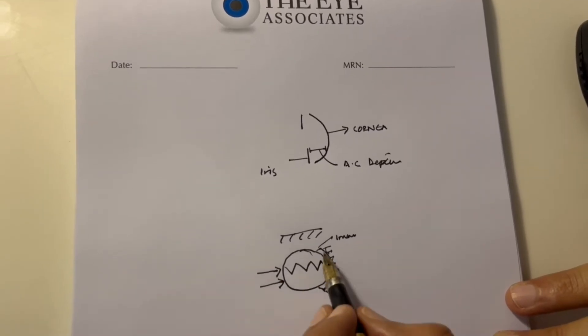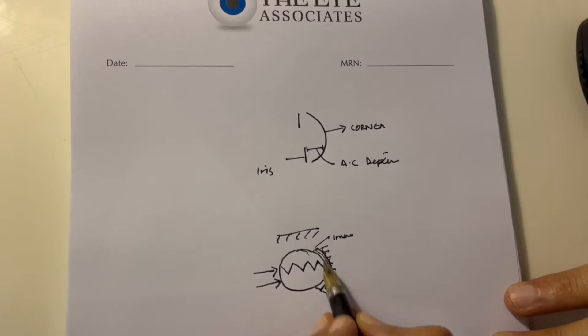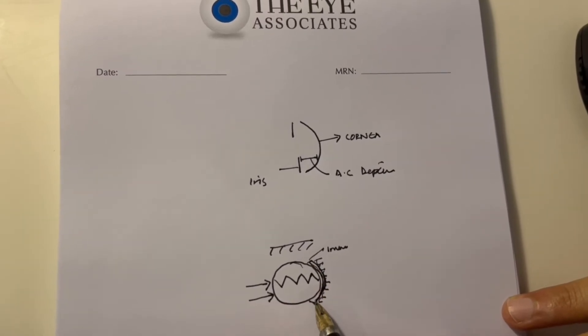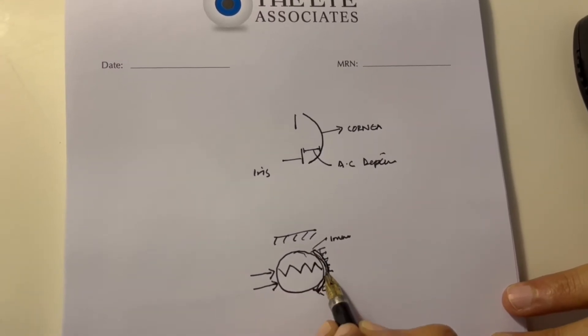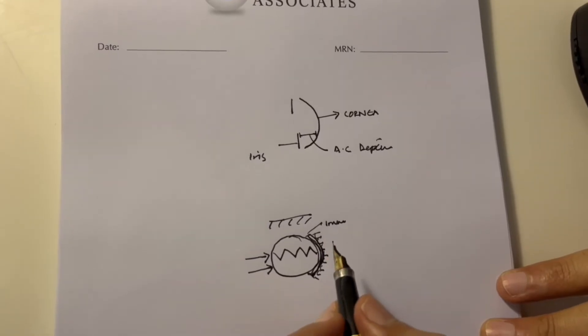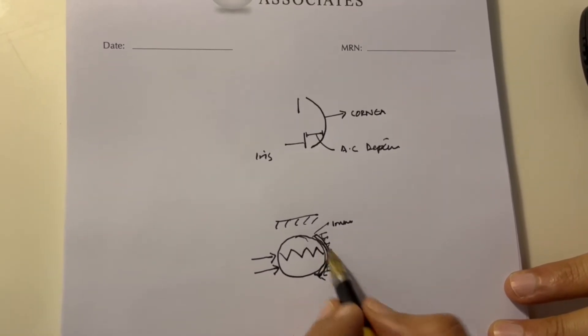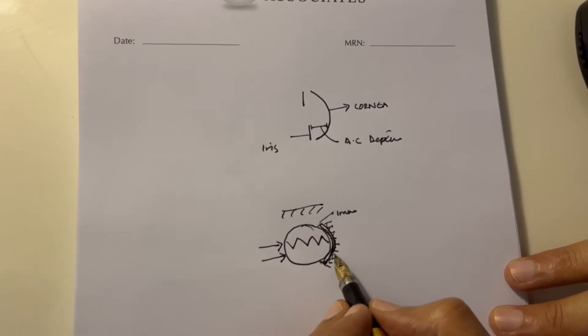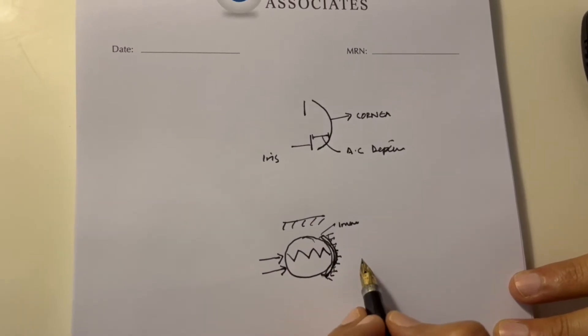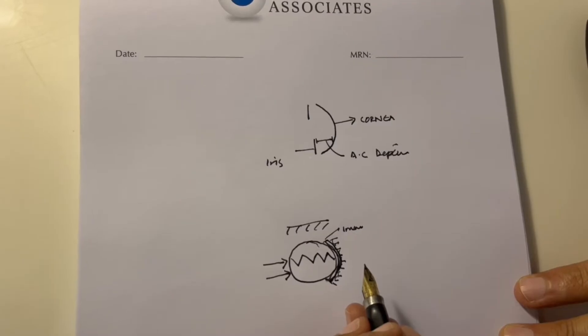If the anterior chamber is shallow, this crescent narrows down. If there's no anterior chamber depth, meaning the iris is in contact with the cornea, this reflected crescent or light won't be present at all.